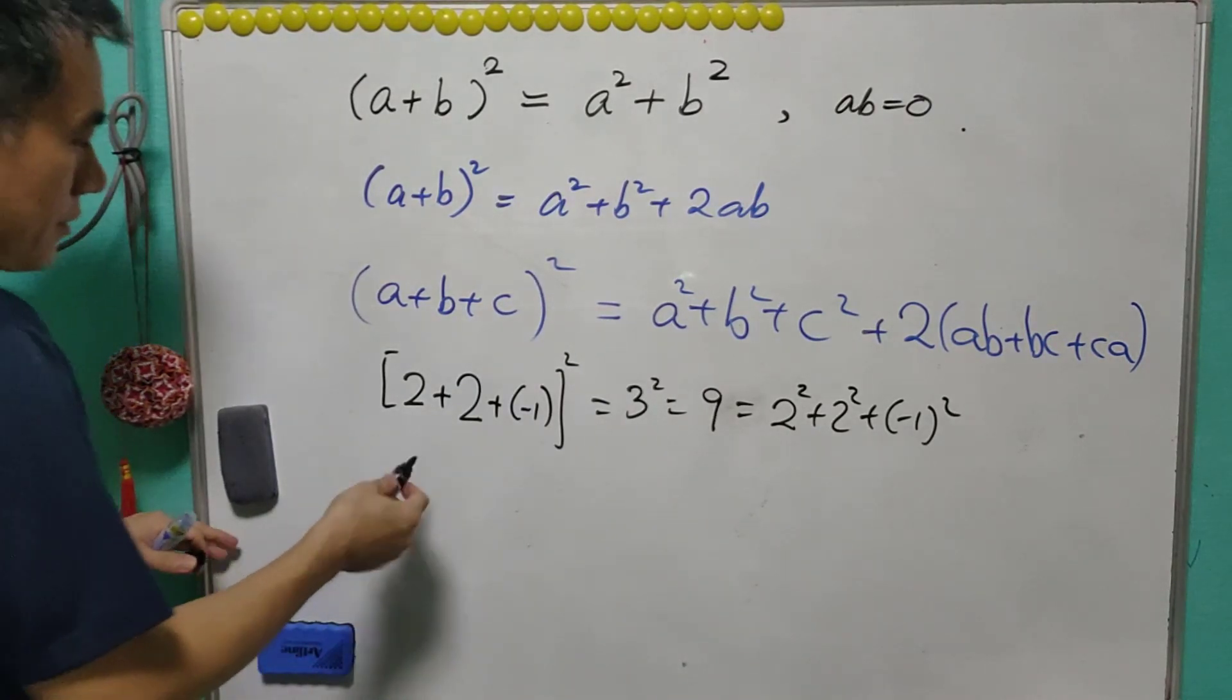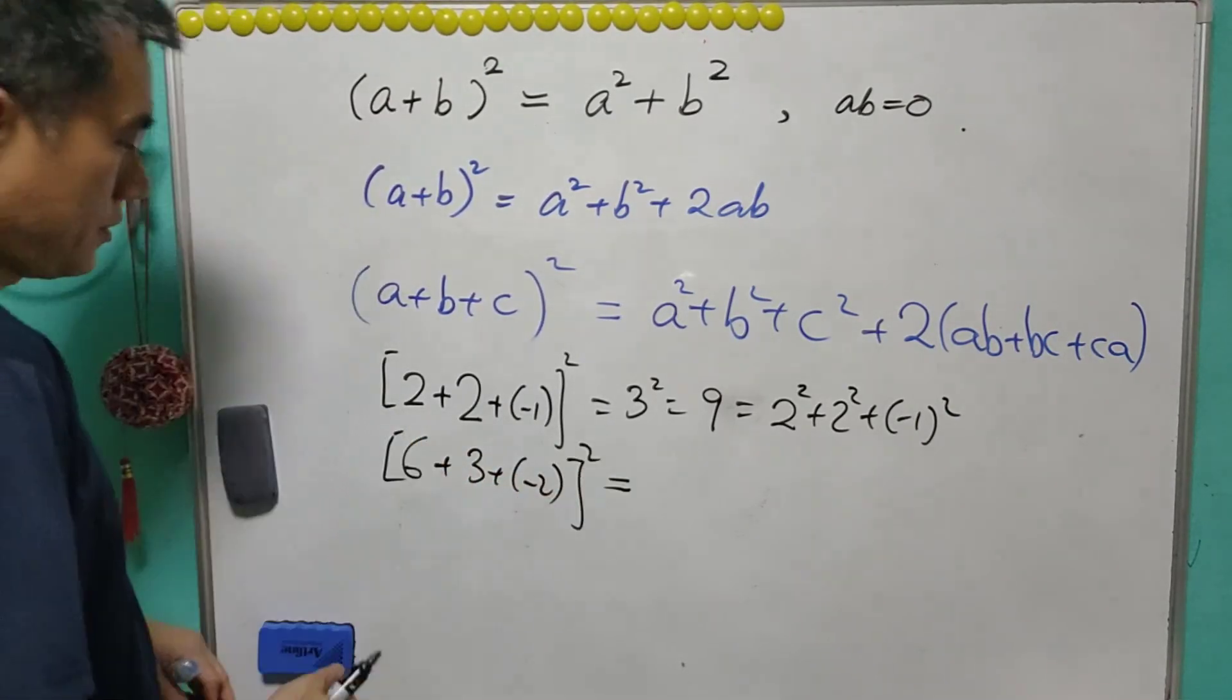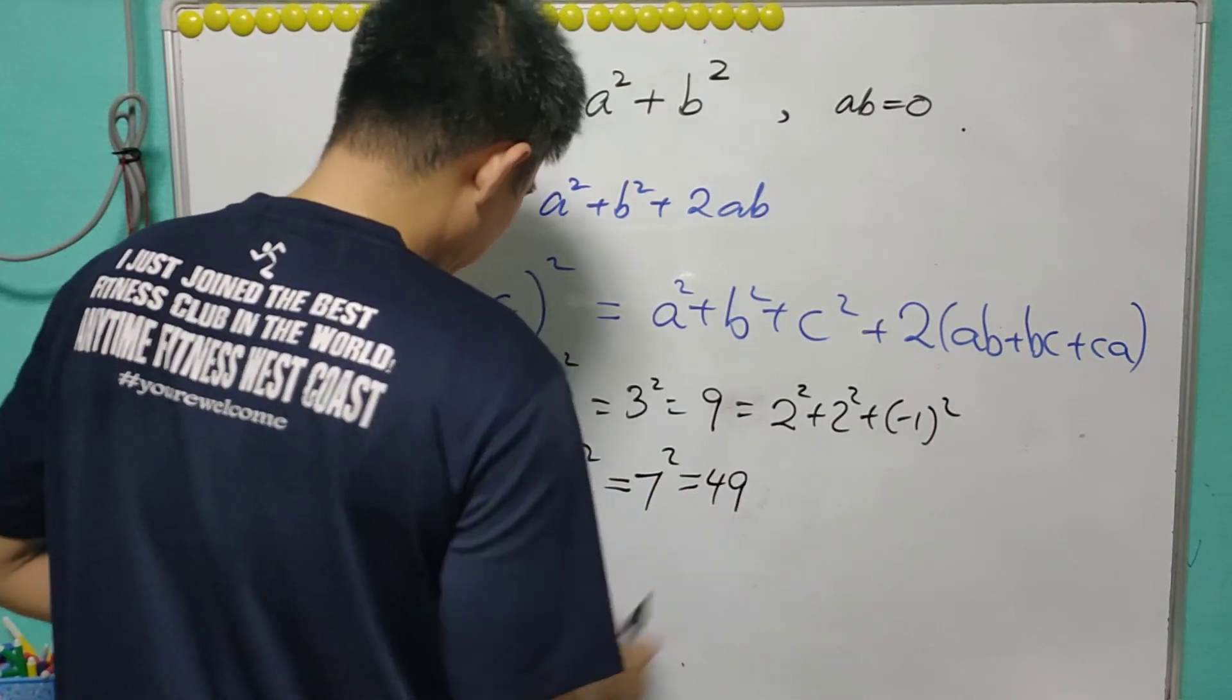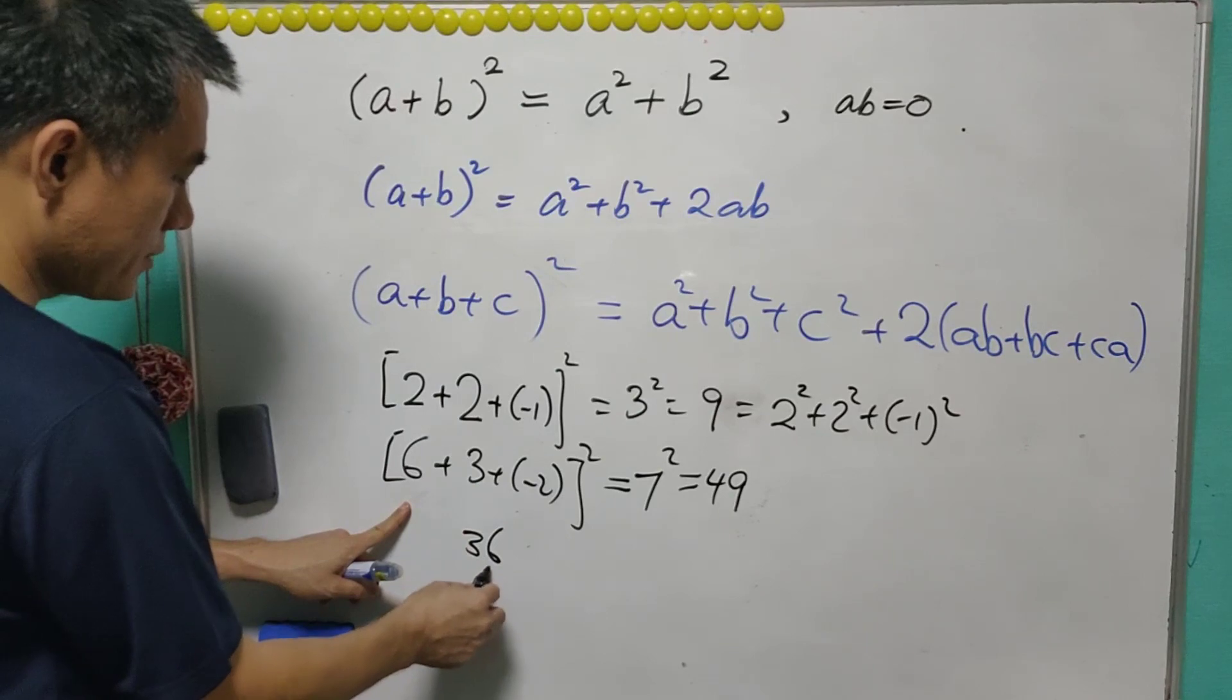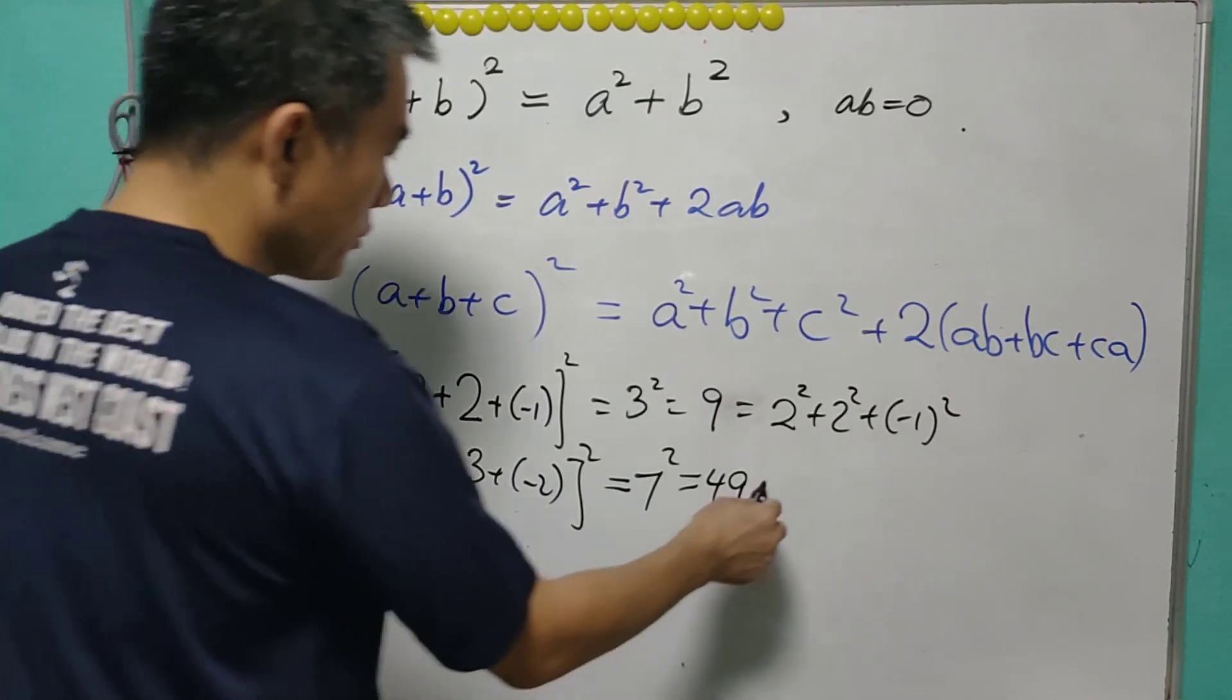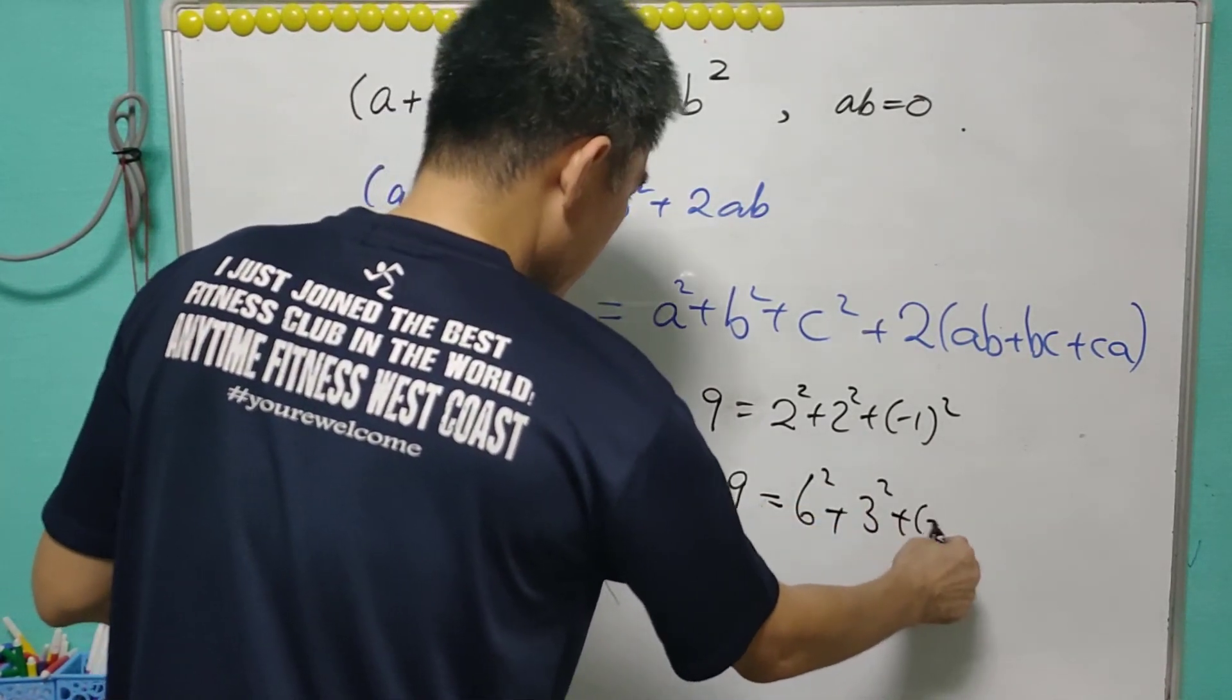And we can have the next example, 6 plus 3 plus negative 2. So with this, this will equal to 7 square that is 49. Now 6 square is 36, 3 square is equal to 9, negative 2 square is equal to 4, and it also sums up to 49. So this is another possible answer.